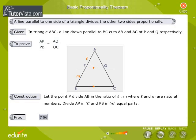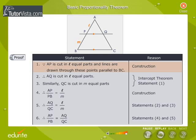Click on Go for the proof of the theorem. AP is cut into L equal parts and lines are drawn through these points parallel to BC, which is nothing but the construction.